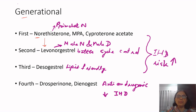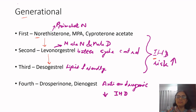That search resulted in the introduction of levonorgestrel, which has better cycle control. Currently, Mala-N and Mala-D supplied by the Government of India contain levonorgestrel. However, levonorgestrel adversely affects lipid metabolism and increases the risk of ischemic heart disease, which led to the search for a more lipid-friendly molecule. Desogestrel was introduced as a third generation progestogen, though it still has some adverse effect on lipid metabolism.